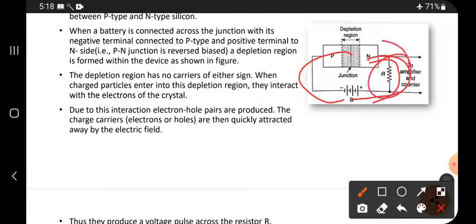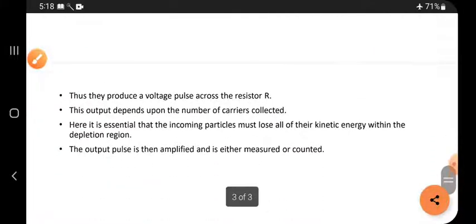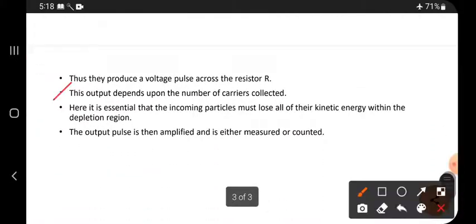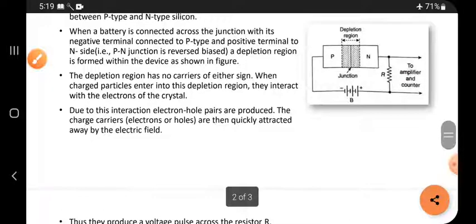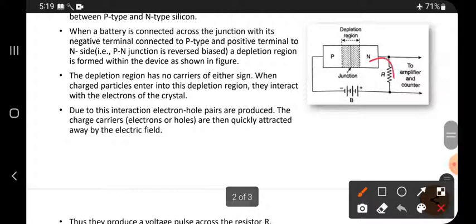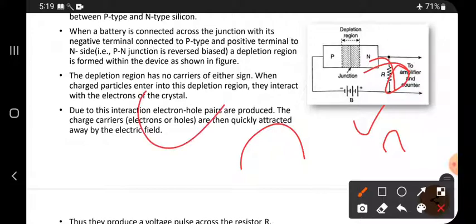When electrons are coming through the resistor, they produce a pulse or develop voltage. Thus, they produce a voltage pulse across the resistor. When charged particles, electrons, are traveling, it produces a voltage pulse. One pulse will be produced.